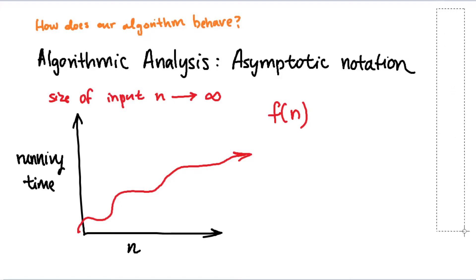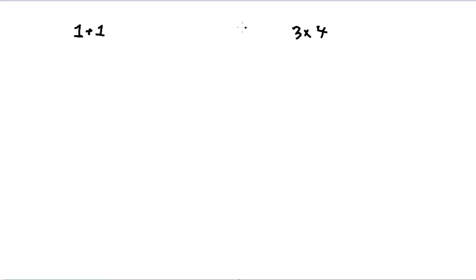Let's start with a basic instance. Say we want our computer to calculate one plus one and also three times four. One plus one is quite straightforward — it's addition — and we can say it takes some constant amount of time, which we'll call k-sub-a, for addition. For multiplication, we'll call it k-sub-m — that's how long it takes for a computer to multiply those two numbers.